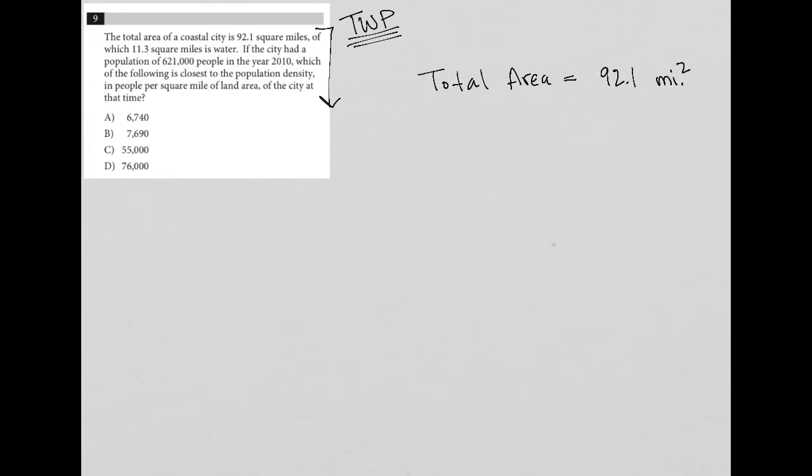Of which 11.3 square miles is water. So this total area is 11.3 miles squared water plus - let me just get my calculator out - 92.1 minus 11.3 is 80.8, so plus 80.8 square miles. I'm assuming land, but I can always adjust that if I need to.